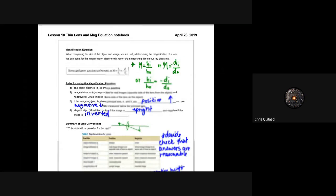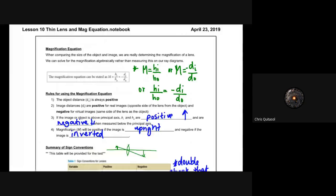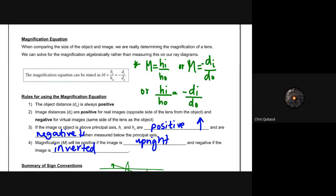Now let's talk about the magnification equation so we can get it all done in one shot. Just like the thin lens equation, there are a couple of rules to understand. The magnification equation helps us determine the size of the object and image — specifically, how big or small the image appears as a result of the lens's ability to refract light. The magnification equation is: m = hᵢ/h₀ = −dᵢ/d₀. You can separate them into two equations or set them equal to each other depending on what you're solving for.